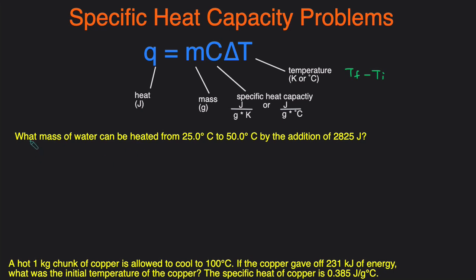The next question is: what mass of water can be heated from 25 degrees Celsius to 50 degrees Celsius by the addition of 2,825 joules? We have the initial and final temperatures, so delta T is final minus initial — 50 minus 25 — giving a change in temperature of 25 degrees Celsius. We're given that 2,825 joules of heat was added, so that's our Q value. We're solving for the mass.